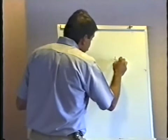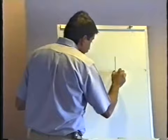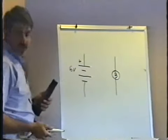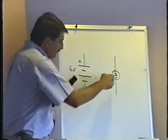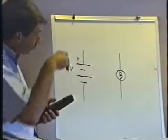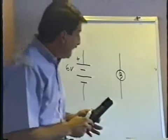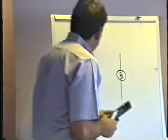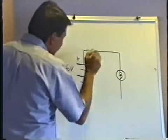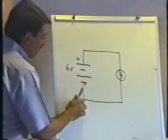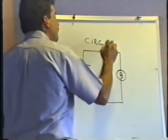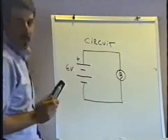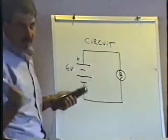The schematic symbol for a lamp looks like a circle — representing the glass envelope — with a little curly Q inside representing the filament. Connecting the two together are wires, and the schematic symbol for a wire is just a line. When we have all this stuff hooked up, we have what is known as a circuit — C-I-R-C-U-I-T, or in Spanish, circuito.